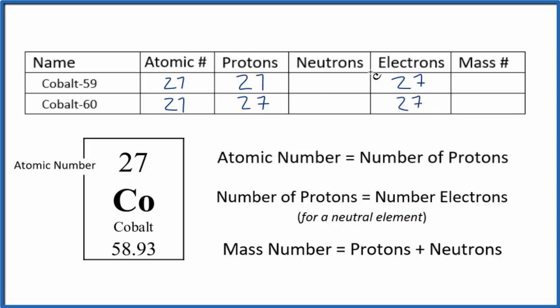The only thing that's going to be different for the different isotopes of cobalt is the number of neutrons and the mass number. We have this hyphen notation here. That tells us this 59, that's the mass number for cobalt 59. So, we can put a 59 in for the mass number here. Cobalt 60, that's its mass number.